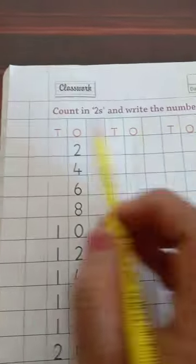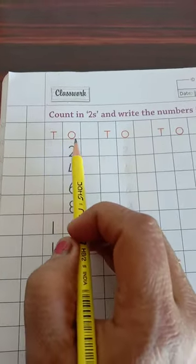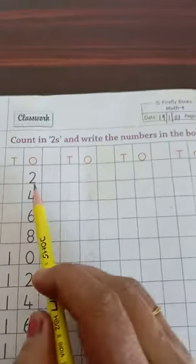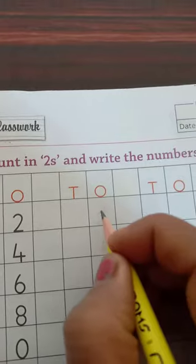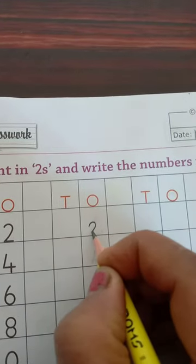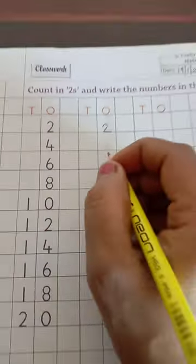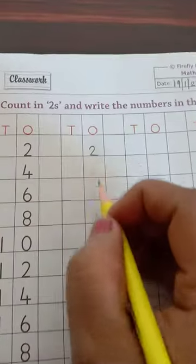T is 10's place and O is 1's place. Now we have to count the numbers in 2, so the first number is 2. We will write it in the O's place, 2 touching the line. Now we have to do table of 2.